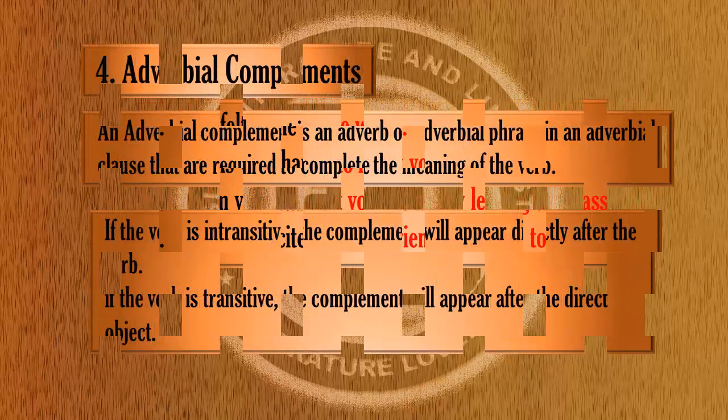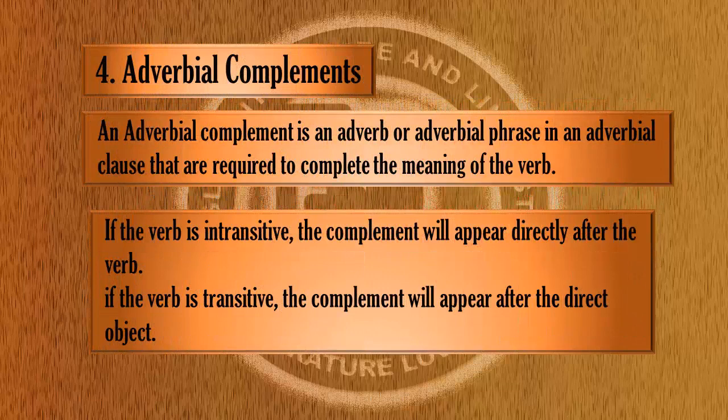The fourth type of complement is the adverbial complement. An adverbial complement is an adverb, adverbial phrase, or adverbial clause that is required to complete the meaning of the verb. If the verb is intransitive, the complement will appear directly after the verb. In case the verb is transitive, the complement will appear after the direct object.